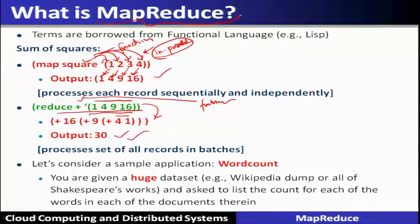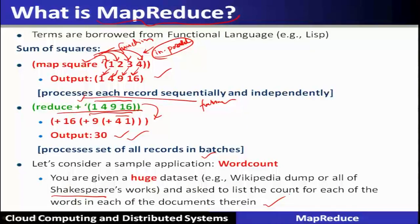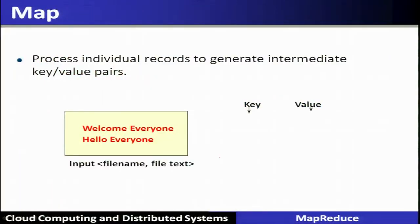For example, with a large data set such as a Wikipedia dump, you want to find a keyword like 'Shakespeare' and list the count for each word in a given document. This application is handled by a MapReduce program called word count. Let us see how the word count program works with a huge data set submitted through MapReduce.